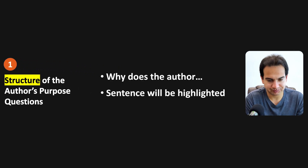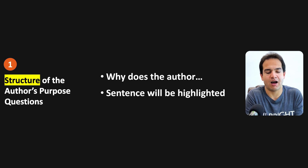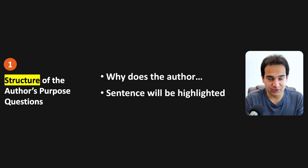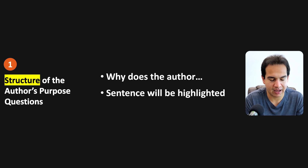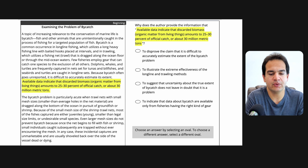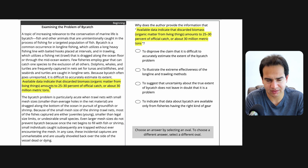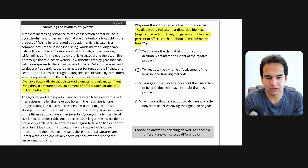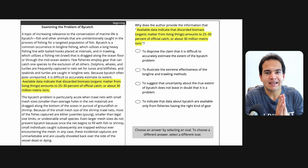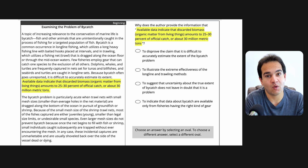Let's start with the structure. When you see 'why does the author,' that is when you know that this is an author's purpose question. The author will be mentioned there, and the sentence will also be highlighted. Here we see 'why does the author provide' — you now know that this is an author's purpose question. The sentence is highlighted in the question section as well as in the passage section. The question is basically: why has the author included the sentence? What is his purpose? It's very similar to the inference question — you need to understand why he has included that information.